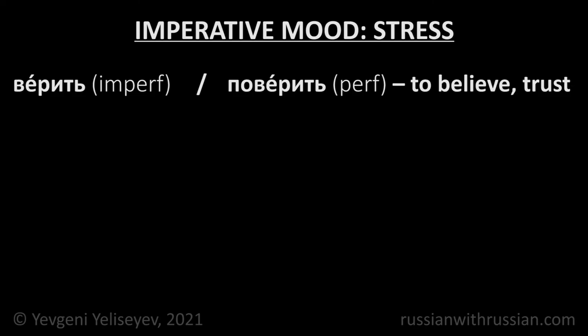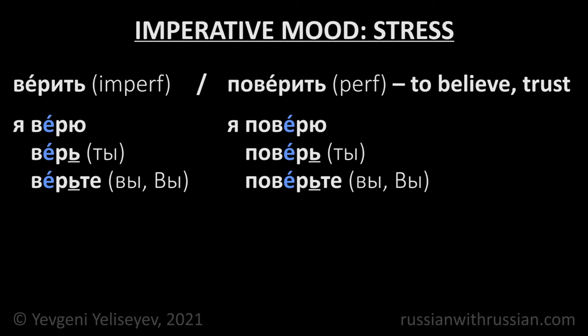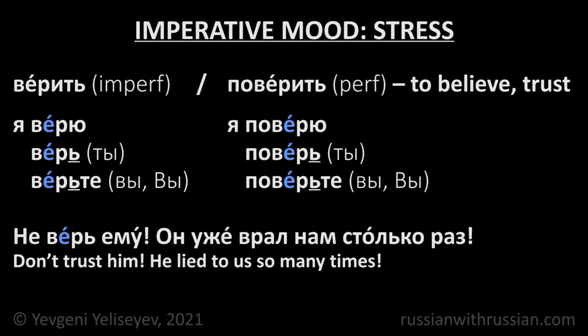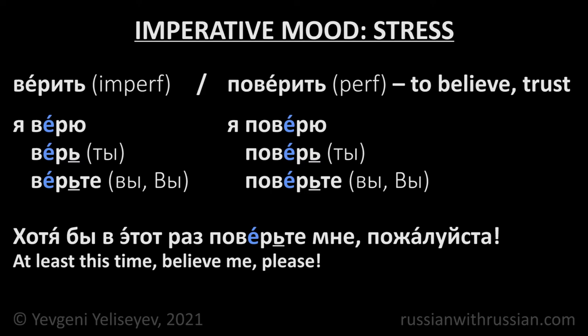Верить / Поверить — To believe / To trust. Я верю, я поверю — the forms Верю, Поверю are stressed on the stem, so the ending is unstressed. The imperative forms also have unstressed endings. After consonants, the unstressed И becomes soft sign. Therefore the correct imperative forms are Верь, Верьте or Поверь, Поверьте. Не верь ему, он уже врал нам столько раз — Don't trust him, he lied to us so many times. Поверьте мне, пожалуйста — Believe me, please.